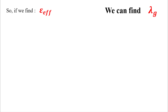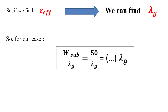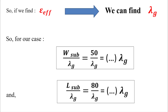With epsilon effective known, we can find lambda g and express our substrate dimensions in function of lambda g. For our case, w substrate divided by lambda g equals 50 divided by lambda g in millimeters. Similarly, the length of the substrate equals 80 millimeters divided by lambda g, giving us the length in function of lambda g.